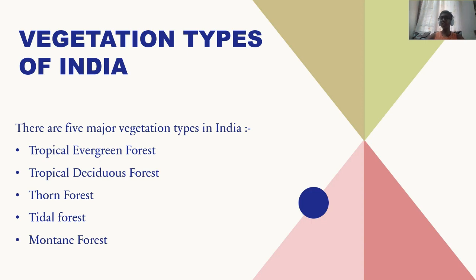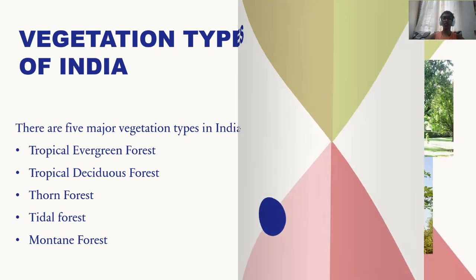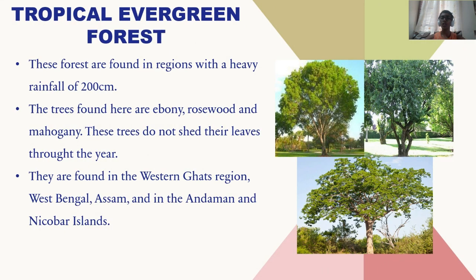The five types are: tropical evergreen forest, tropical deciduous forest, thorn forest, tidal forest, and mountain forest. First, let's know about tropical evergreen forests. These forests are found in regions with heavy rainfall of more than 200 centimeters. Trees found here include Ebony, rosewood, and mahogany. These trees do not shed their leaves throughout the year and remain evergreen — that's why this forest is called evergreen forest. It's also called tropical rainforest. These forests are found in the Western Ghats region, West Bengal, Assam, and the Andaman and Nicobar Islands.